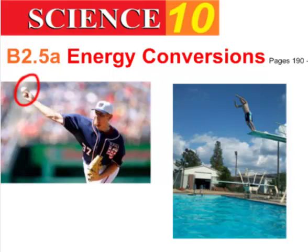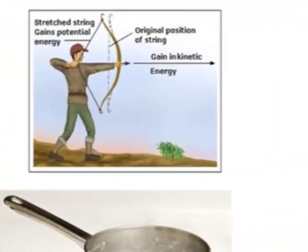This diver up here, because he's up so high on this diving board, has a lot of potential energy. When he jumps off the diving board, the energy of his height is going to be converted into kinetic energy — he's going to fall towards the water due to gravity.